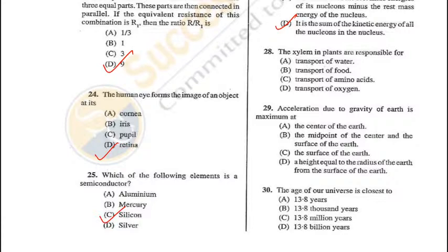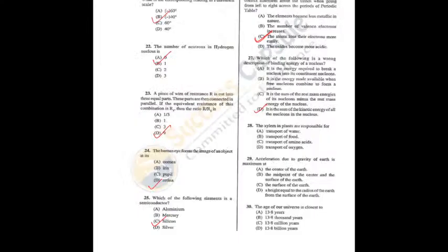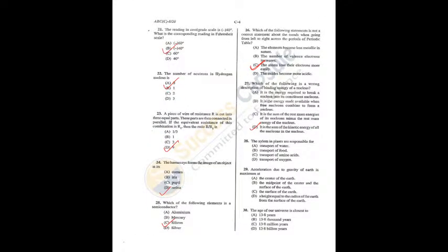Question 30: The age of our universe is closest to 13.8 billion years — D is the correct answer. To recap: Q28 = A, Q29 = C, Q30 = D.